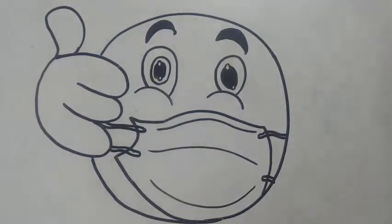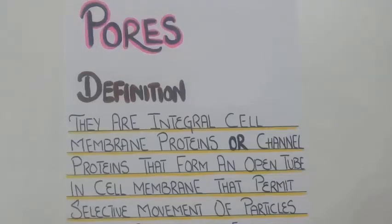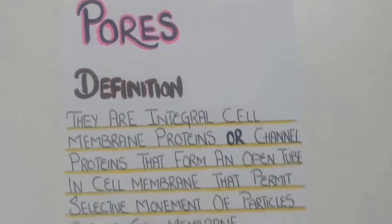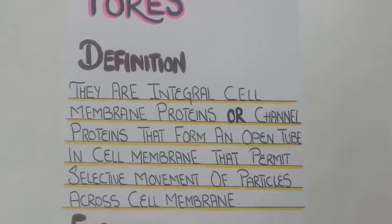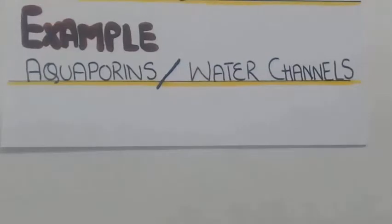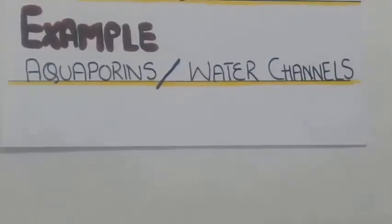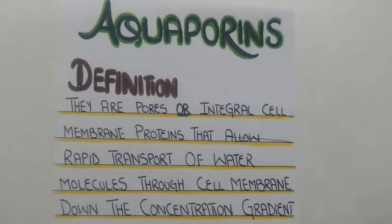Let's get started. Pores are integral cell membrane proteins or channel proteins that form an open tube in the cell membrane and permit selective movement of particles across the cell membrane. An example of pores in our body is aquaporins, or the water channels. Aquaporins are pores or integral cell membrane proteins that allow rapid transport of water molecules.